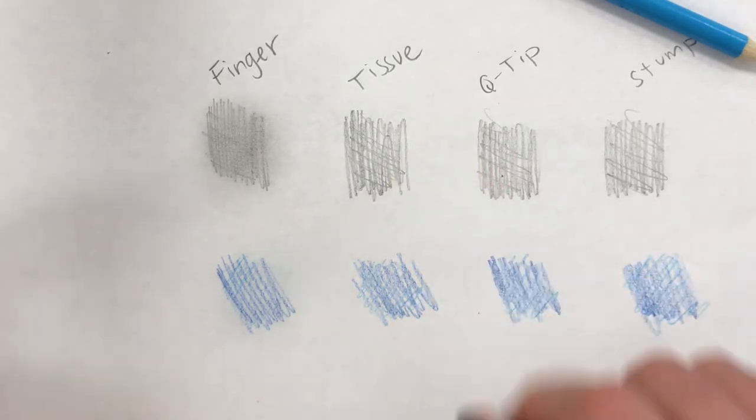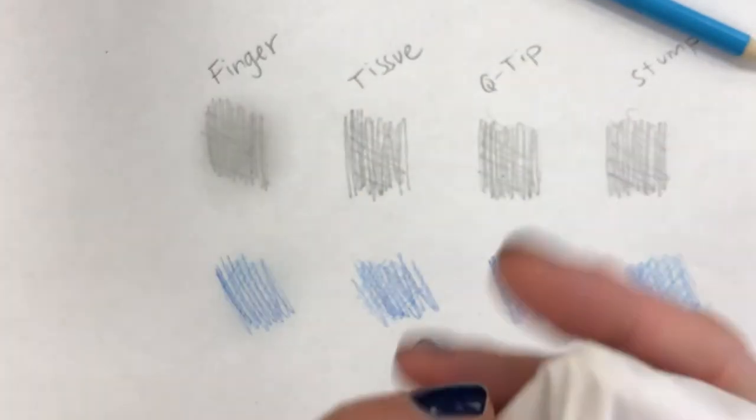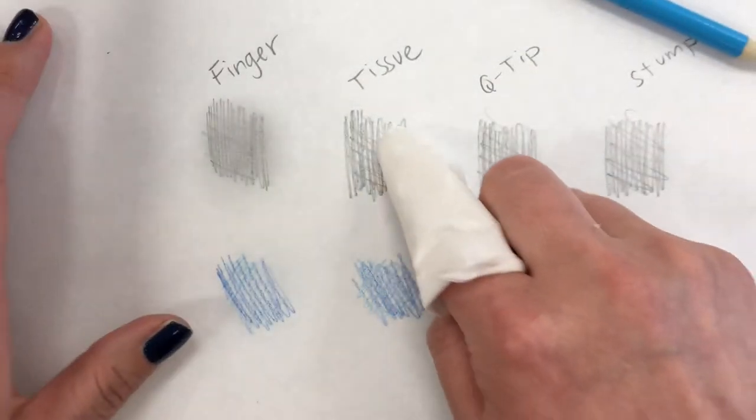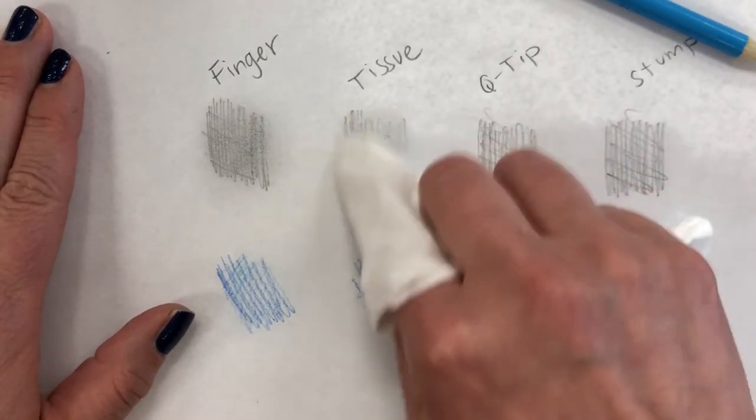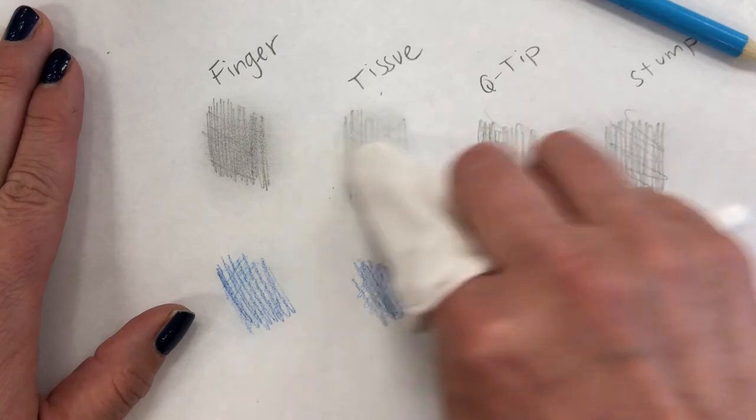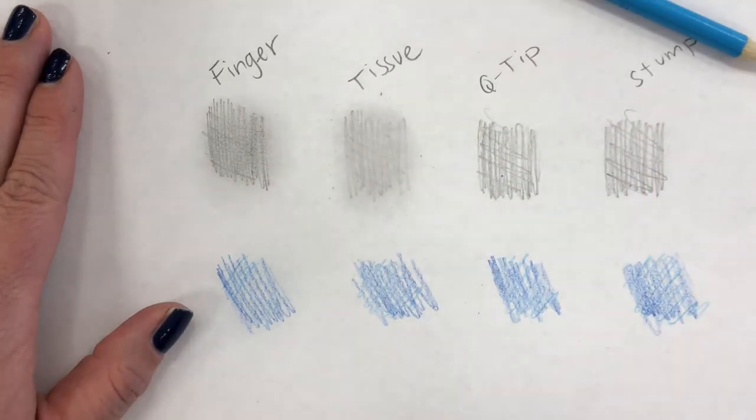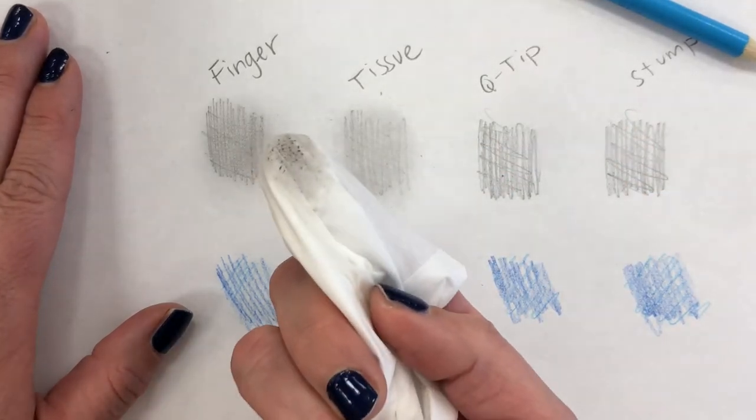Let's move on. Trying the same thing with tissue. For tissue, I like to wrap the tissue around my finger. Tissue is great if you don't want to get your hands dirty. Yeah, that's really, it does a lot lighter blending and there's a lot more of it on the tissue.